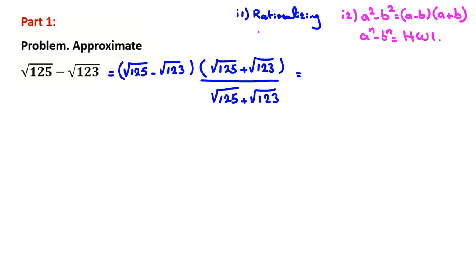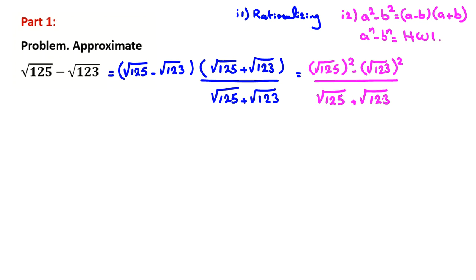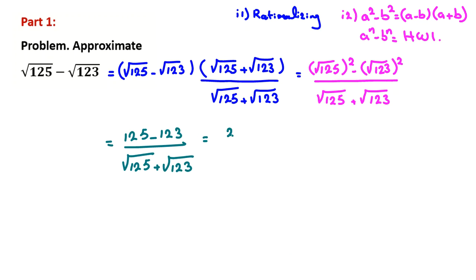In the numerator, applying this identity gives [√(1/5)]² minus [√(1/3)]², all over √(1/5) plus √(1/3). Simplifying, the numerator becomes 1/5 minus 1/3, which equals −2/15, over √(1/5) plus √(1/3).